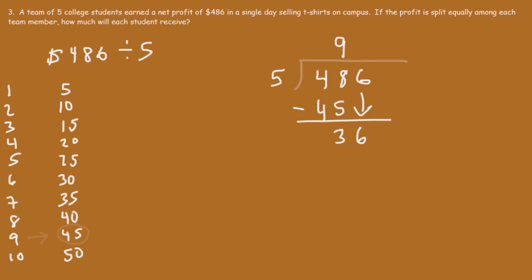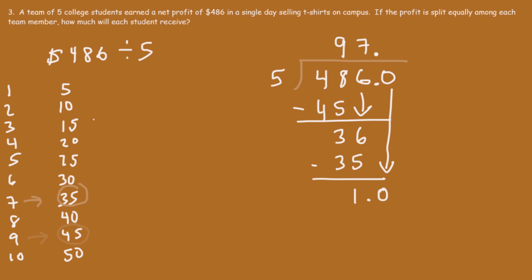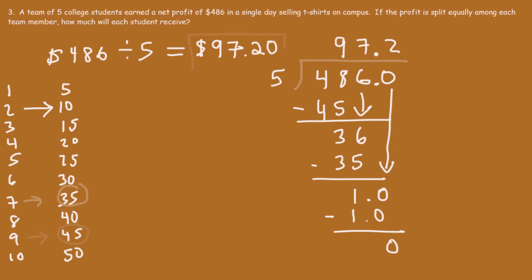How many times does 5 go into 36? The highest multiple of 5 just under 36 is 35, so 5 goes into 36 seven times. 5 times 7 is 35. 36 minus 35 is 1. Since 5 doesn't go into 1, we add a decimal point and a 0, treating it as 10. 5 goes into 10 two times, so that's 0.2. 5 times 0.2 is 1, remainder 0. So 486 divided by 5 is 97.2, meaning each team member should receive $97.20.